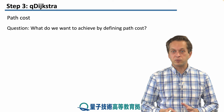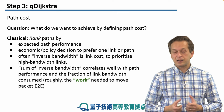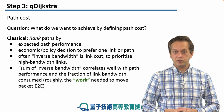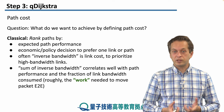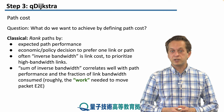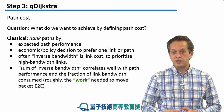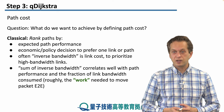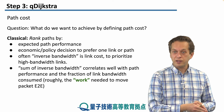What are we trying to achieve by defining a path cost? Classically, paths can be ranked by expected path performance, or by economic and policy decisions that might prefer one link over another. Often we can define the inverse bandwidth as a link cost, which will prioritize high bandwidth links. Using this, it makes sense to define a sum of inverse bandwidths, and in fact this path cost correlates well with path performance and the fraction of link bandwidth consumed. Roughly, we can define this as the work the network needs to do to transfer a packet from one end to the other.